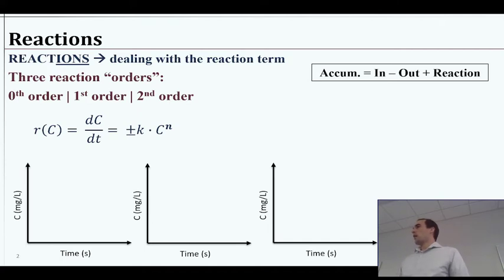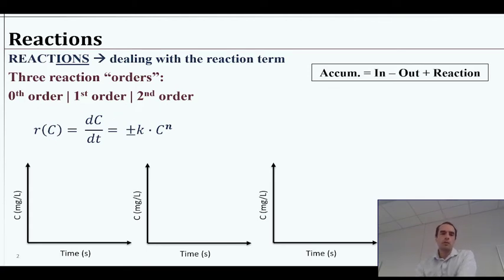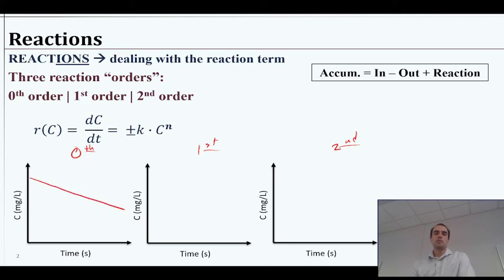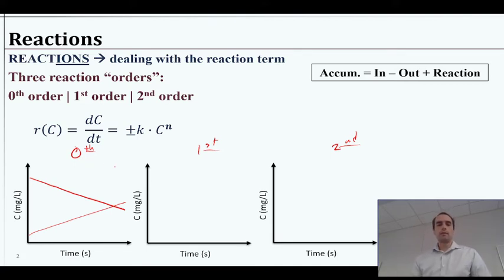We have three reaction orders that are common, two of which we'll be dealing with — second order reactions we're mostly not going to bother with. So we have zero order, first order, and second order reactions. For zero order, concentration changes over time but the rate at which it's changing does not change — the derivative is constant. That could be a decay reaction or a growth reaction.